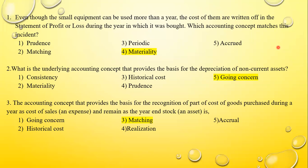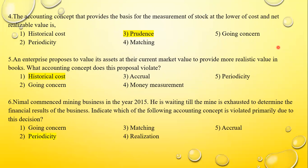Question three: The accounting concept that provides a basis for the recognition of part of the cost of goods purchased during a year as cost of sales, and the remainder as closing stock — an asset. The cost of sales goes into the cost of sales adjustment, while closing stock is entered in the statement of financial position under current assets. The concept is the matching concept. Question four: The accounting concept that provides a basis for the measurement of stock at the lower of cost and NRV is prudence. Question five: An enterprise proposes to value its assets at current market value. The accounting concept violated is historical cost.